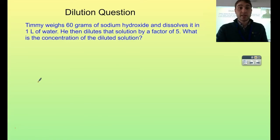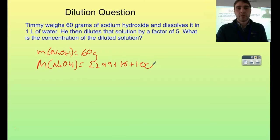Second question: Timmy weighs 60 grams of sodium hydroxide and dissolves it in 1 litre of water. He then dilutes that by a factor of 5. What's the concentration of the diluted solution? I'm going to start by figuring out the concentration of the original solution, then do a 5 times dilution. First, mass of sodium hydroxide is 60 grams.